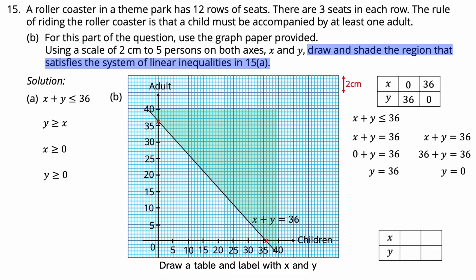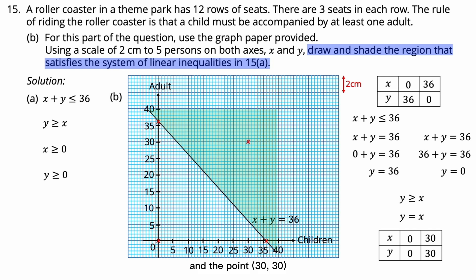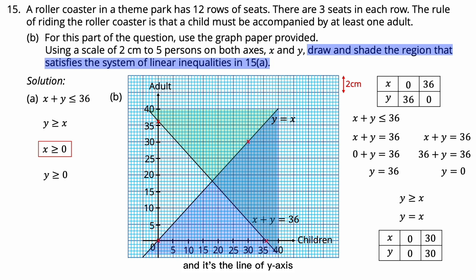For the inequality Y ≥ X, convert to the equation Y = X. When X = 0, Y = 0; when X = 30, Y = 30. Plot points (0, 0) and (30, 30), join with a solid line, and shade the unsatisfied region below the line. For X ≥ 0, draw a solid line on the Y-axis and shade the unsatisfied region to the left.